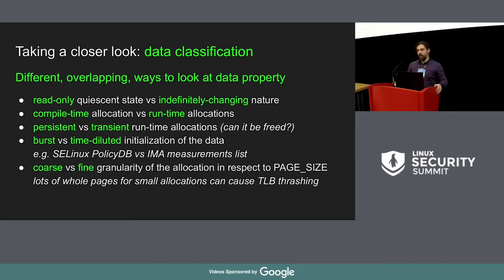The way the memory is modified might make a difference in how it needs to be protected. One example is if you load a SELinux policy DB — you just have a burst when data is loaded from a file, processed, and that's it. After that point, you can consider it as a constant. The granularity at which data is allocated and treated can also play a role in the classification and the way of protecting it.